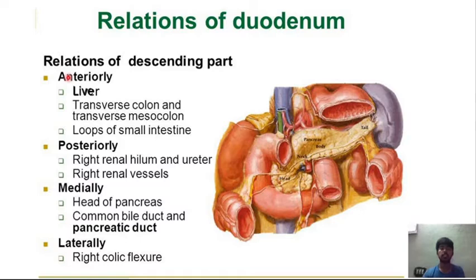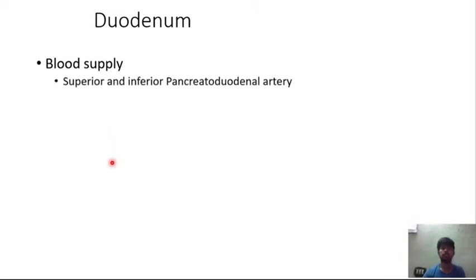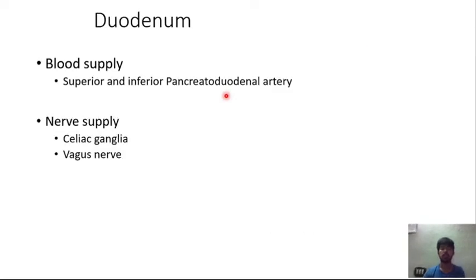The relations of the duodenum: anteriorly, the liver, transverse colon, transverse mesocolon, and loops of small intestine. Posteriorly, the right renal hilum, ureter, and right renal vessels. Medially, the head of the pancreas, common bile duct, and pancreatic duct. Laterally, the right colic flexure. Blood supply is from the superior and inferior pancreaticoduodenal arteries; nerve supply by the celiac ganglia and vagus nerve.